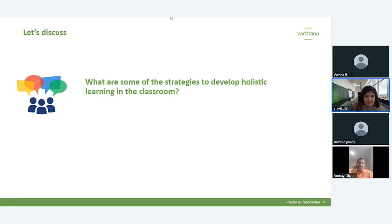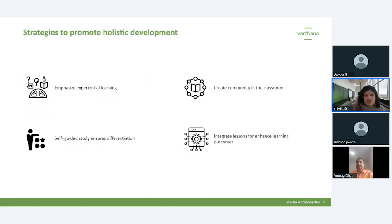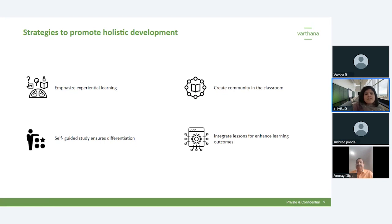Some strategies to develop holistic learning in the classroom: the basic strategy is to include experiential-based learning — putting a lot of emphasis on it. Some of these strategies include more experiences through debate, discussion, case studies, involving students in self-evaluation, and project-based learning. One of the ways to make a holistic classroom is to enhance and include more and more experiential learning within the classroom.